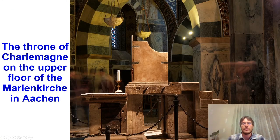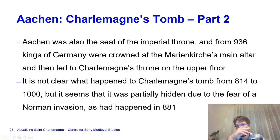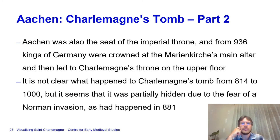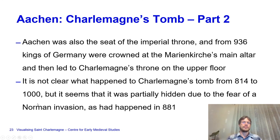There was also an altar of Saint Charlemagne. While Charlemagne's throne was used as a state throne, it is not clear what happened to Charlemagne's tomb for a long time—from 814, his death, to the year 1000. It seems it was partially hidden due to the fear of Norman invasion, which did actually occur in 881 when the Normans took Aachen.